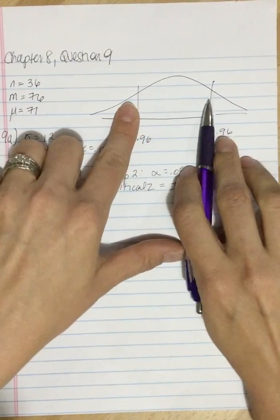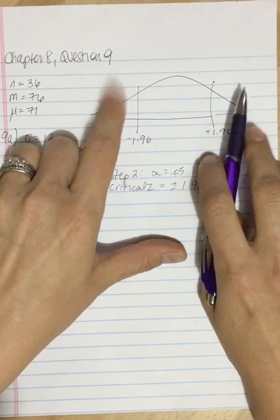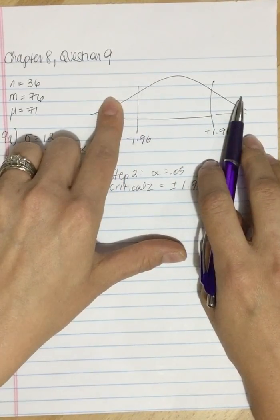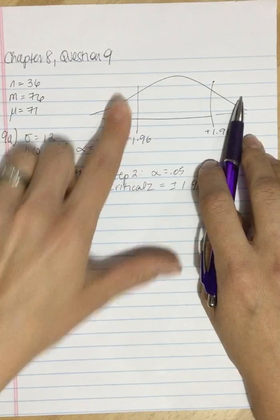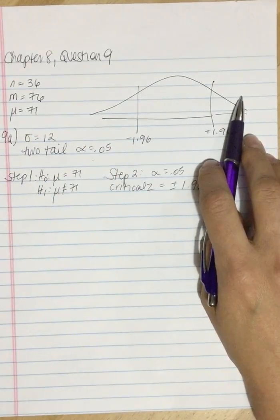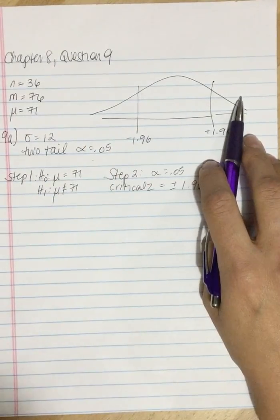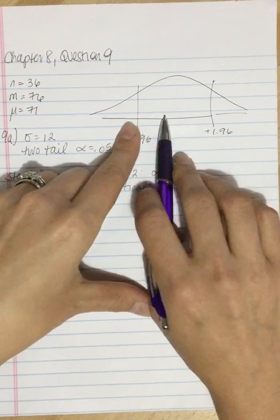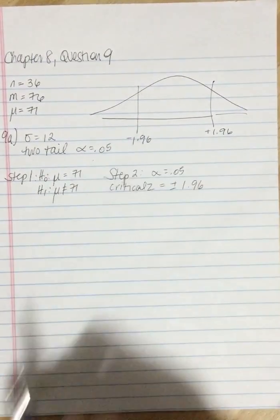And anything that's going to be more extreme falling into either of these tails is going to be significant. We're going to reject the null hypothesis. We're going to accept the alternate. If it falls somewhere in this middle, then we're going to fail to reject the null hypothesis.